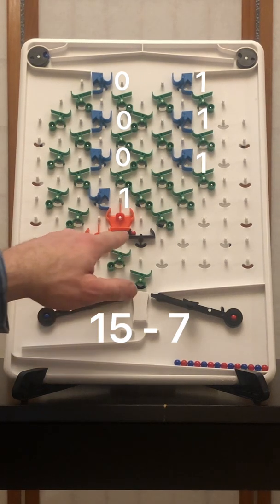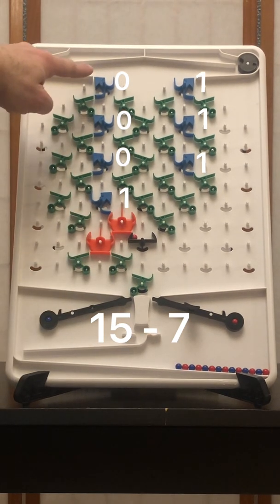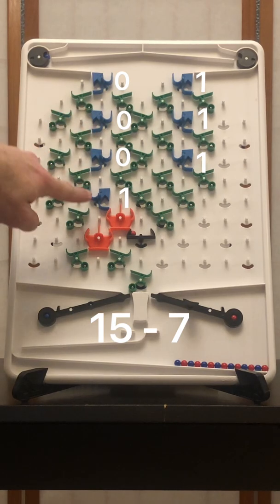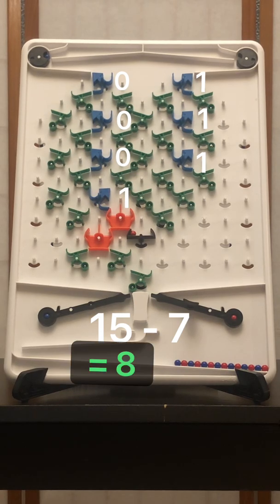And there we have it completed. The red ball means that we have a valid answer. We have 0, 0, 0, and the fourth bit represents 8, meaning that 15 minus 7 is 8. We got the right answer.